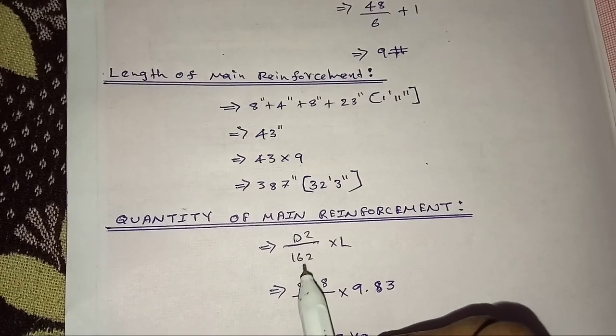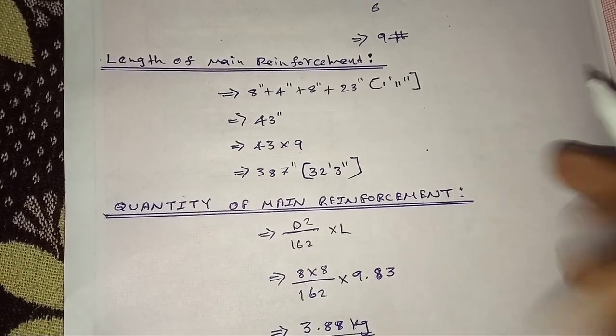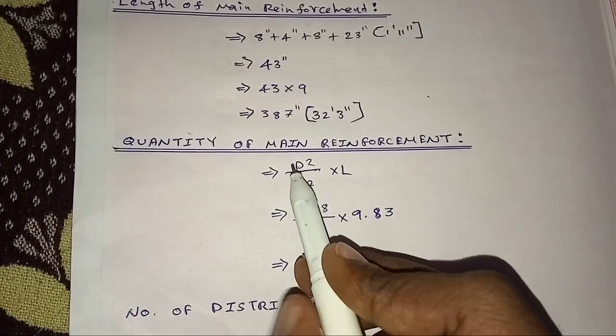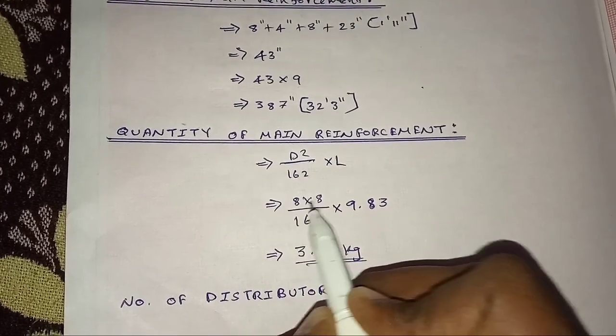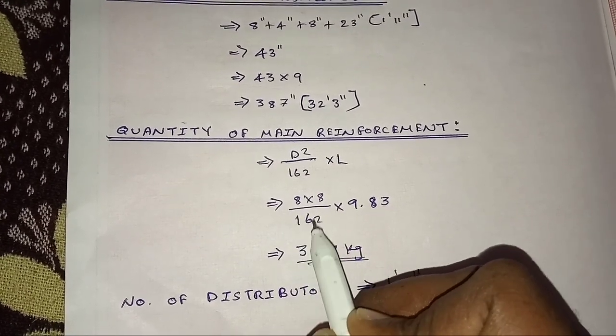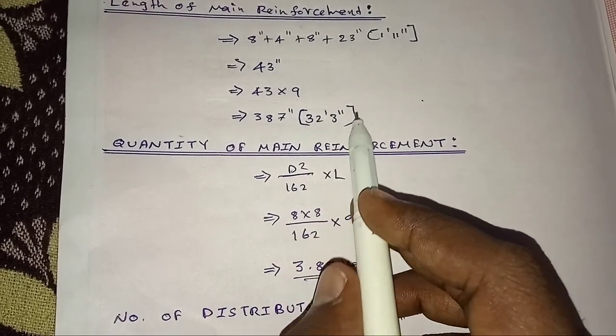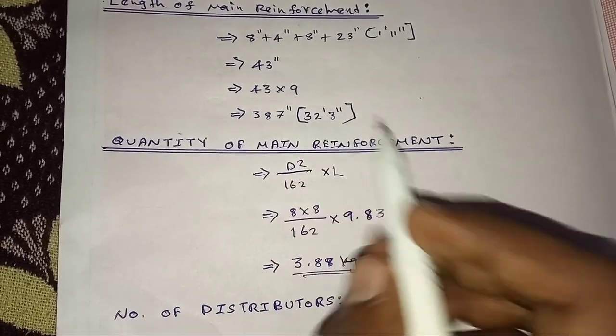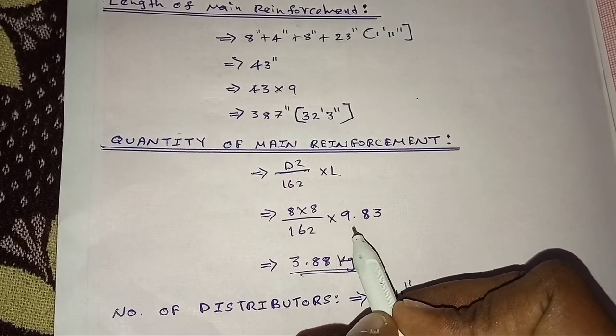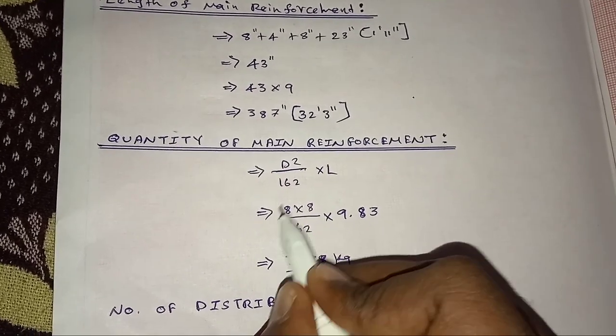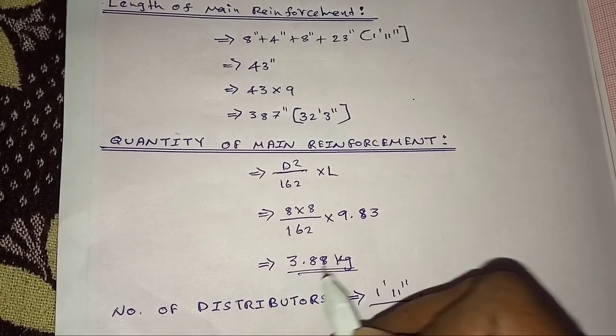D squared by 162 into length. D is the main reinforcement diameter, 8 into 8 divided by 162 into length. This equals 9.83, this equals 3.88 kg.